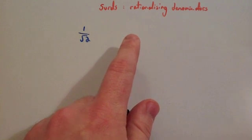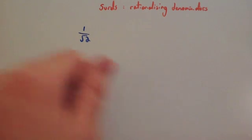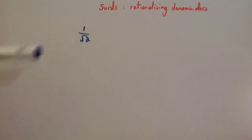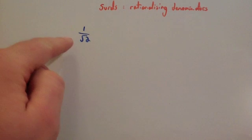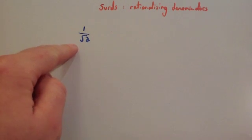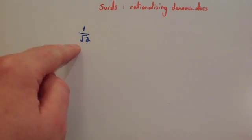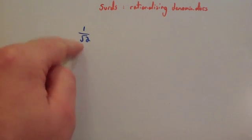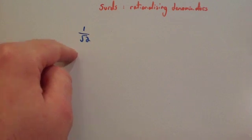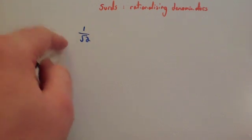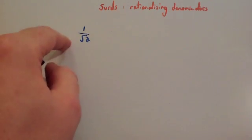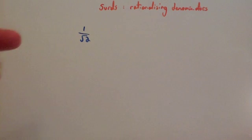In this video on surds we're going to look at how to rationalise the denominators. So if you've got a fraction and on the denominator, at the bottom line, you've got a surd, that's obviously going to be an irrational term. So it's quite normal to try and rationalise the denominator — in other words, making the denominator a rational term, so a whole number.